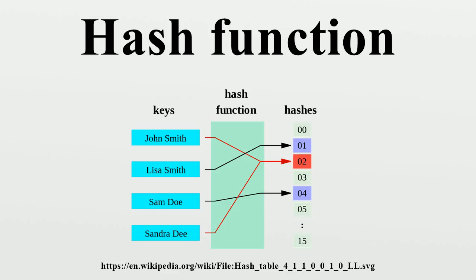Data normalization. In some applications, the input data may contain features that are irrelevant for comparison purposes. For example, when looking up a personal name, it may be desirable to ignore the distinction between upper and lower case letters. For such data, one must use a hash function that is compatible with the data equivalence criterion being used.